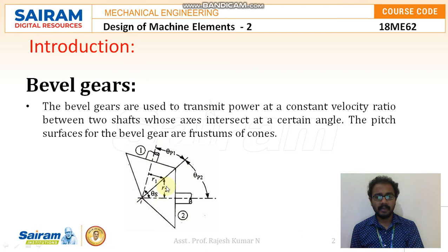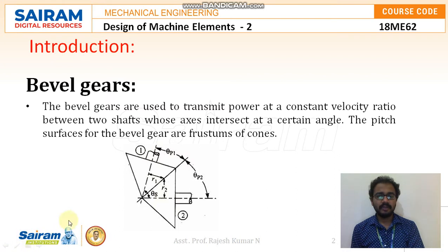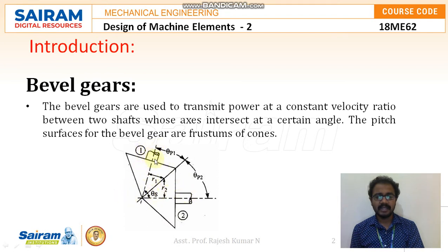The important point is constant velocity ratio. The velocity ratio formula is i = n1/n2 = d2/d1, and the velocity ratio will be maintained. Constant velocity ratio means the ratio is supposed to be 2, 3, or 4 — within that range only we need to transmit the power. The two shafts — one being the driver and the other the follower — are each mounted with a bevel gear, and power is transferred from the driver shaft to the follower shaft.